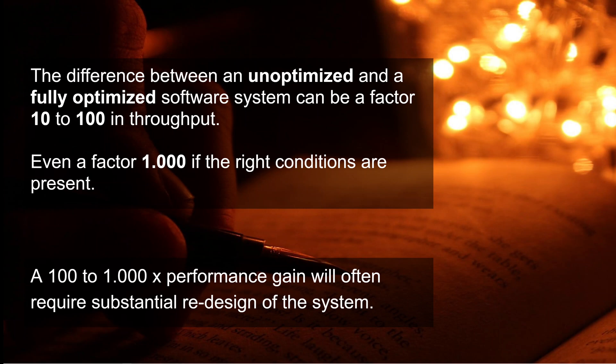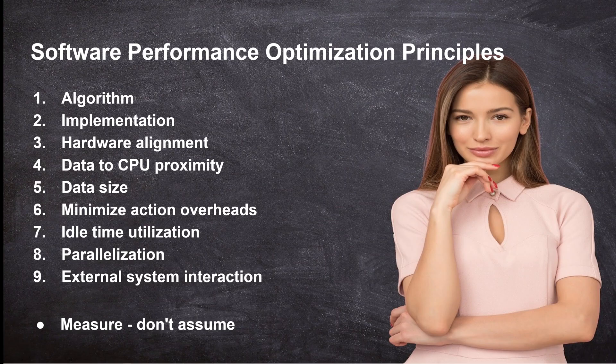However, a factor of 100 to 1000 performance gain will often require substantial redesign of the system, so it's not something that you can always get easily. Here are my 9 plus 1 software performance optimization principles. The first 9 principles are optimization techniques, and the last principle is more of a tip to remember during performance optimization.